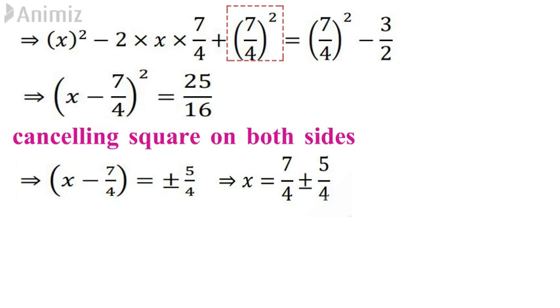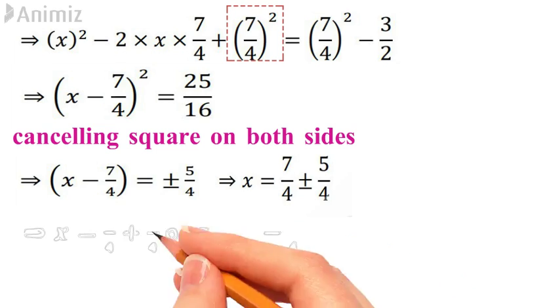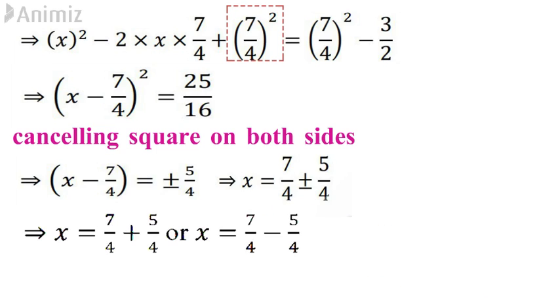Now my x = 7/4 + 5/4 or x = 7/4 - 5/4. So when you go for simplifying, you will get x = 3 or 1/2. So the roots of the equation are 3 and 1/2.